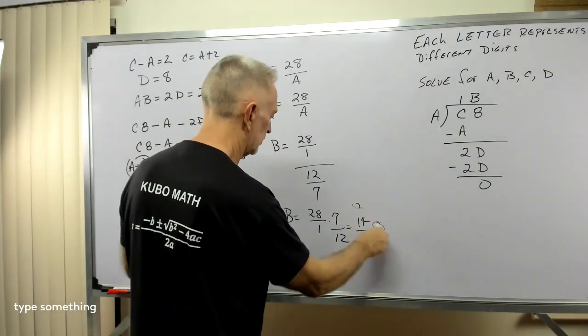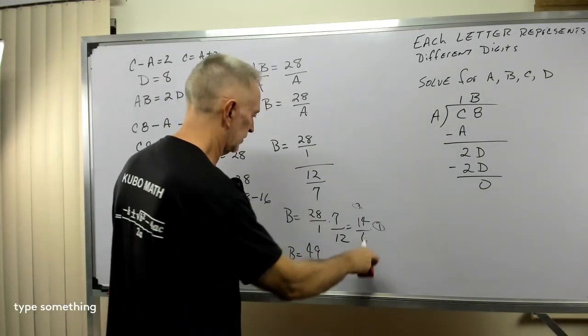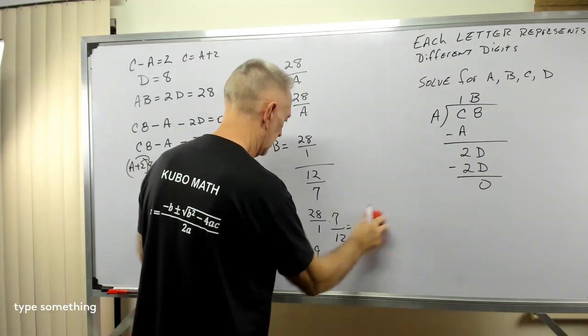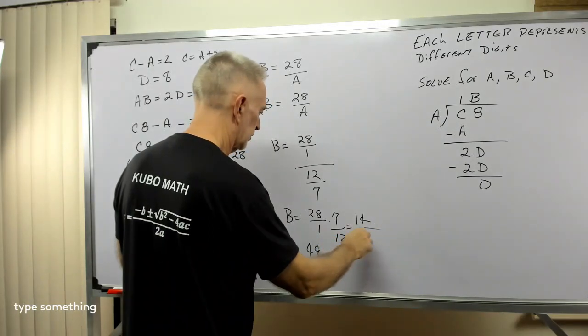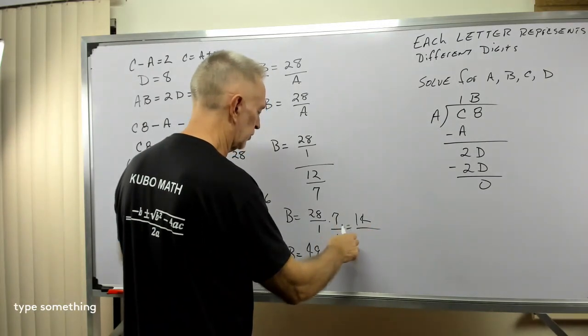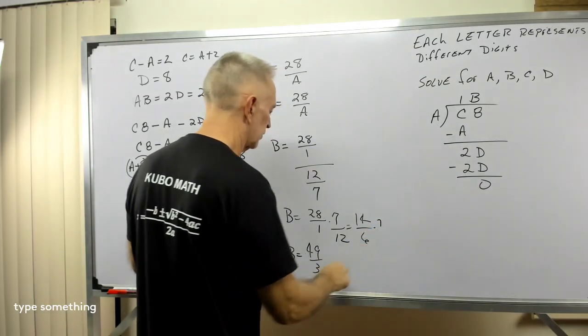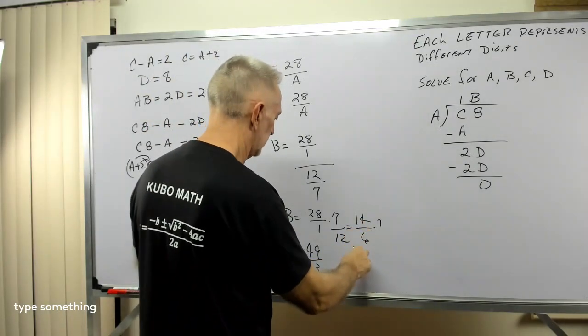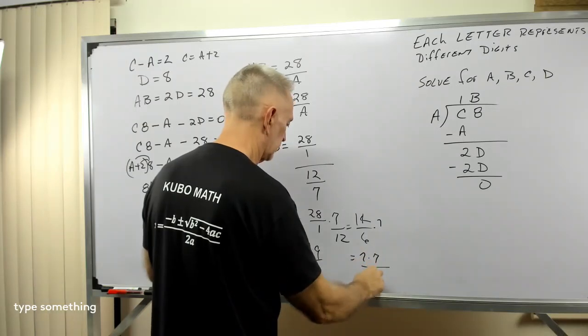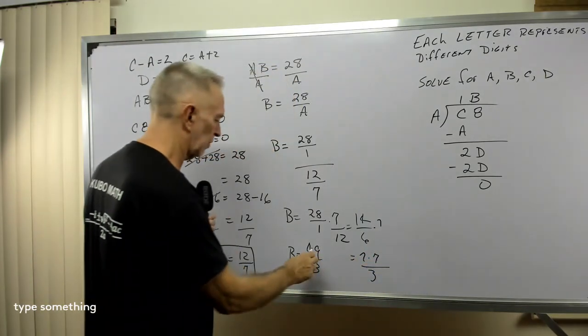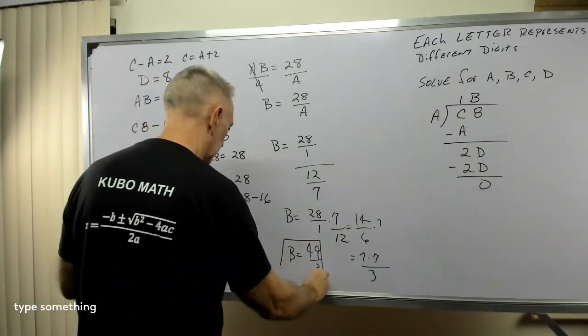So, I have 7 times 7 over 3. So, I have 49 over 3. That was a little bit messy. So, 2 goes into this 14 times. 1 times 12 is 12. So, 2 goes into that 6 times. So, I still have 14 times 7 over 6. Well, 2 goes into 14 7 times. 2 goes into 6 3 times. So, 7 times 7 is 49 over 3. That looks a little better. So, that's B.